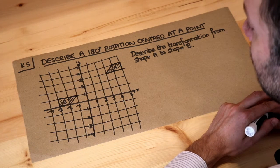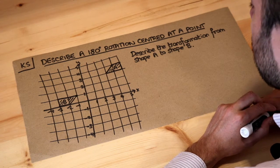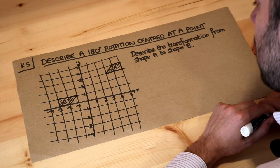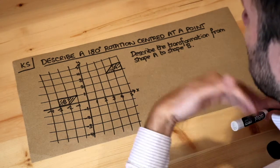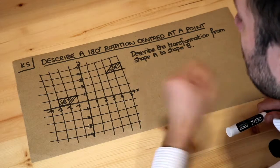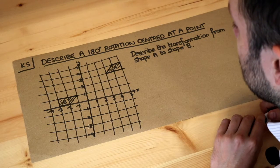Hello and welcome to this Dr. Roster-Mass key skill video on describing a 180-degree rotation centered at a point. In a previous video we were given the center of rotation and told it's the origin, but we could be rotating the shape around any point.